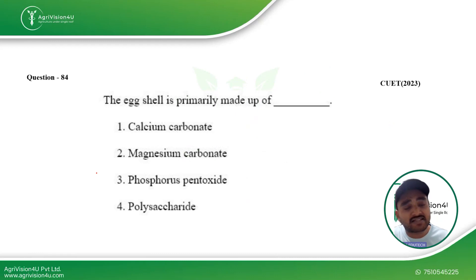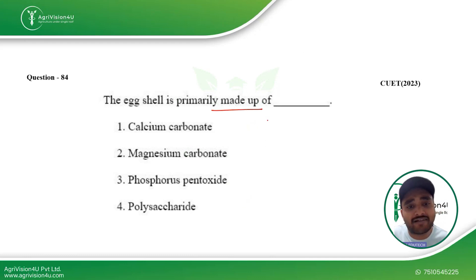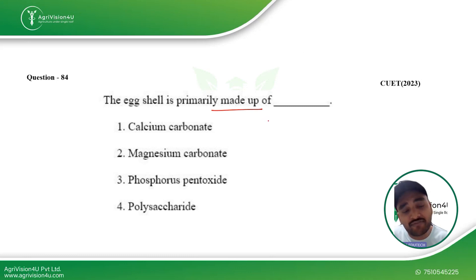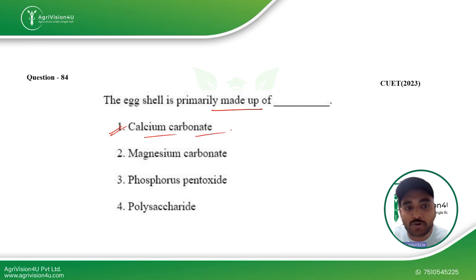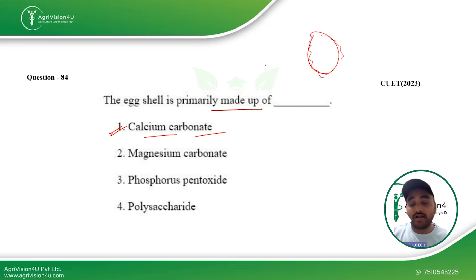Next question: egg shell is primarily made up of — this is a simple question. Even if you have pets at home, it is usually advised to mix eggshells in their diet so they can have enough calcium. Calcium carbonate is the right answer. The outer covering of the egg is primarily made up of calcium carbonate.